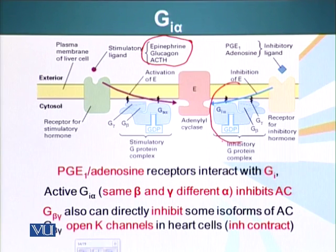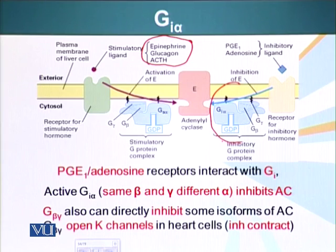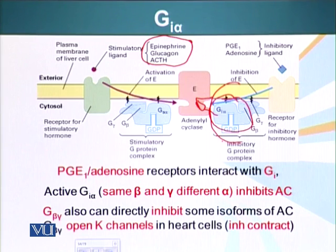The G-proteins that inhibit adenyl cyclase interact with receptors — for example, receptors for prostaglandin E or adenosine. These receptors, once they bind their ligand, activate the G-protein. Once activated, the alpha subunit dissociates from beta and gamma, interacts with adenyl cyclase, and inhibits it. So adenyl cyclase, if it was making cyclic AMP molecules, will now stop.